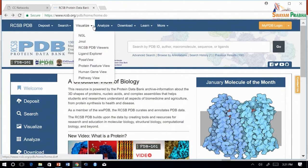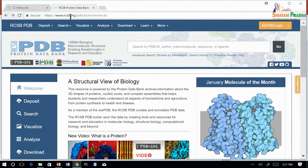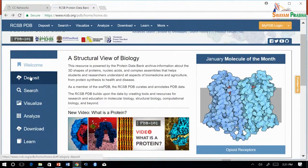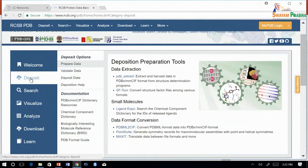First go to this URL rcsb.org/PDB. You can click on each menu item on the left side to learn about the resources available in PDB. In the deposit menu item, experimentalists can deposit their data which is biological structures elucidated by x-ray crystallography or NMR.